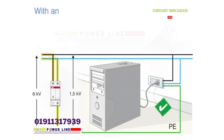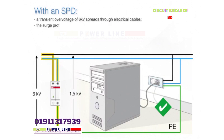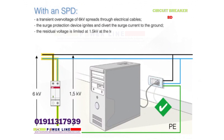With an SPD, a transient overvoltage of 6 kilovolts spreads through electrical cables. The surge protection device ignites and diverts the surge current to the ground. The residual voltage is limited at 1.5 kilovolts at the terminals of the SPD. The server is on the safe side and protected from the overvoltage.